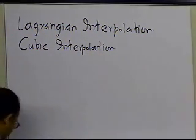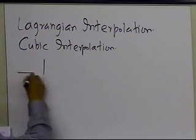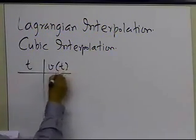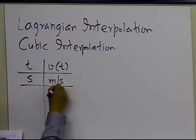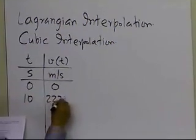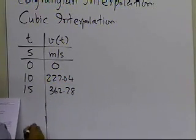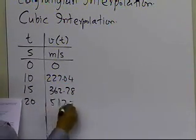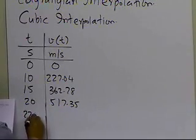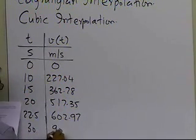The example does have quite a number of algebraic expressions, so you need to be careful about following each of the steps carefully. The example says we are given the velocity as a function of time — time is in seconds, velocity is in meters per second — and it's given as: (0, 0), (10, 227.04), (15, 362.78), (20, 517.35), (22.5, 602.97), and (30, 901.67).